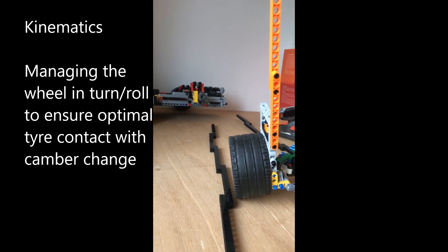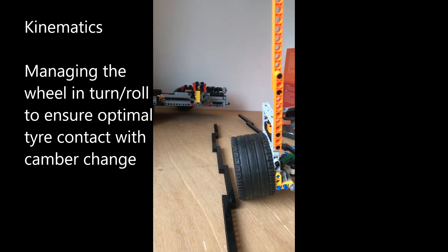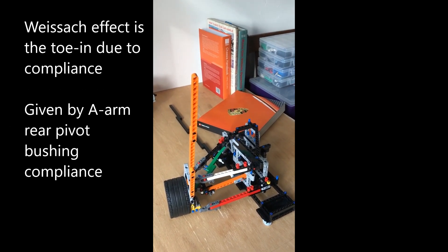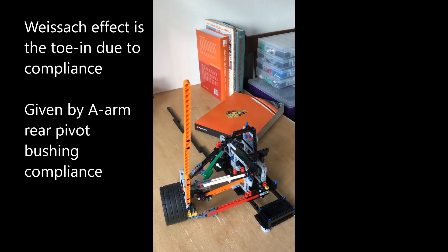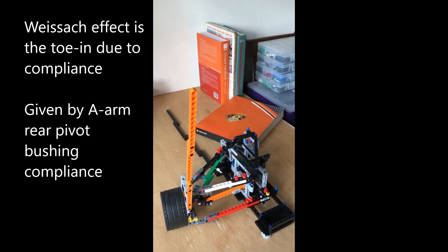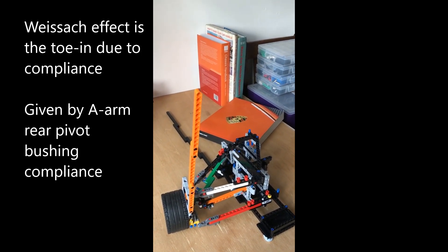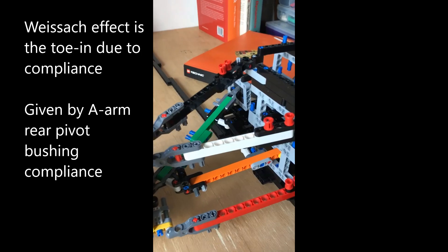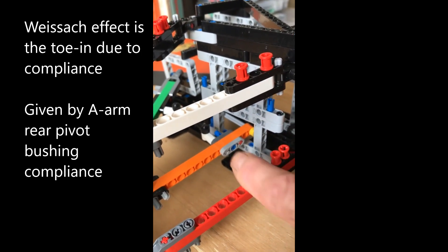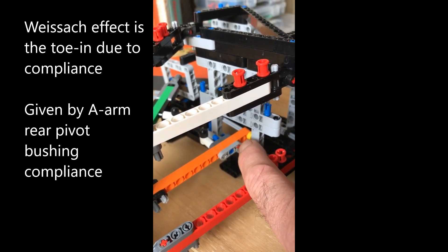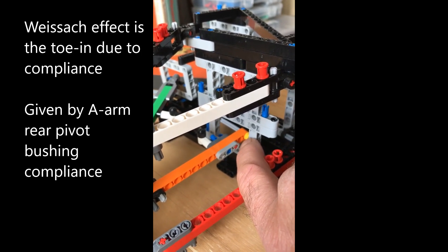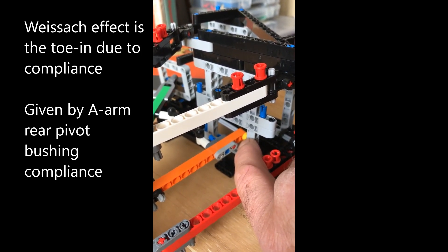Well the Weissach effect with this axle is given by not the kinematic toe but by compliance in toe. The compliance that we referred to in the bush around the forward part, or the rearward part of the A-arm, is a soft rubber bushing designed to be soft and spongy.